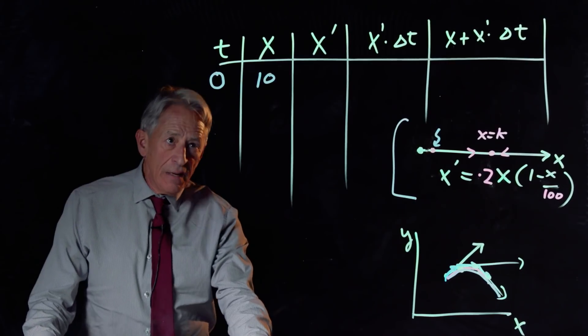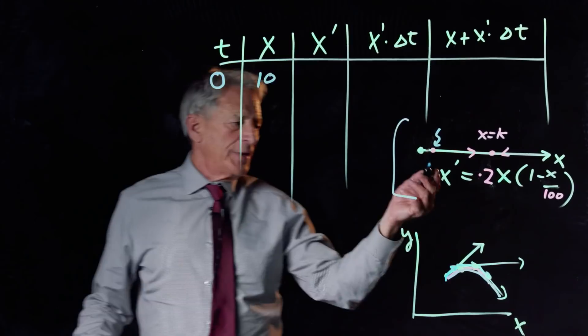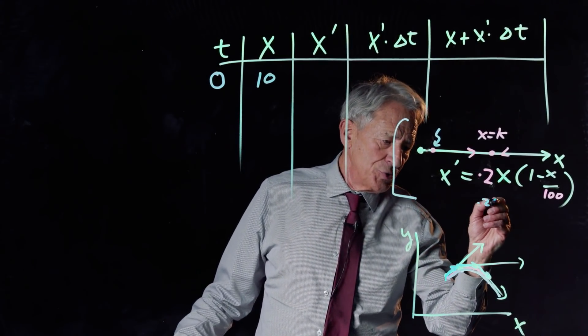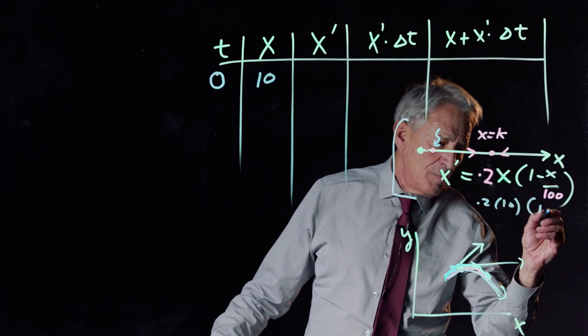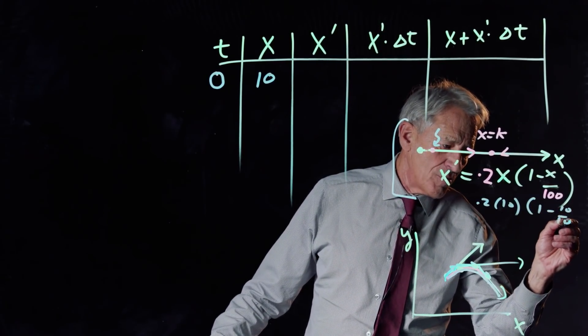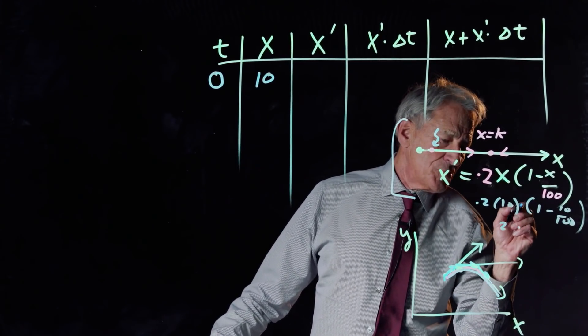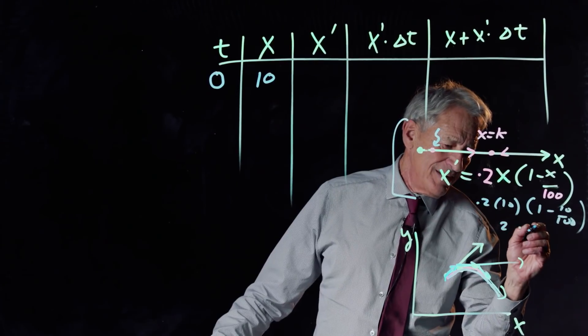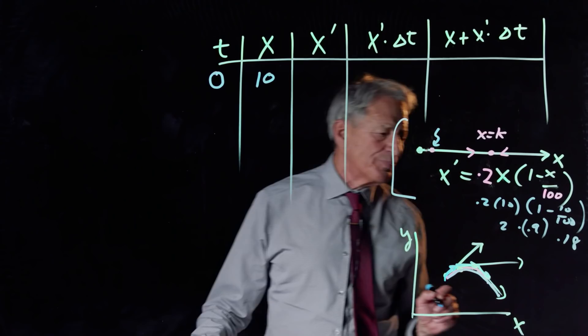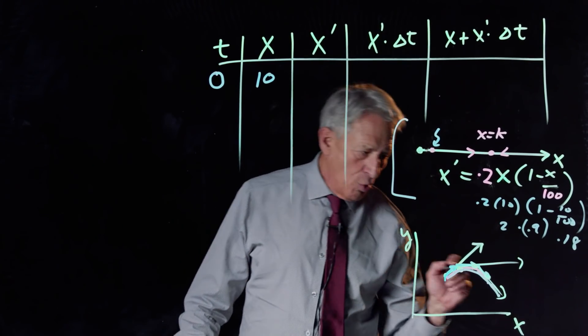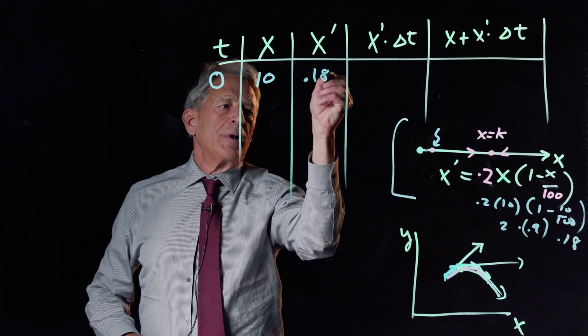Okay, now for X equals 10, what is X prime? Well, it's 0.2 times 10 times 1 minus 10 over 100. That's 2 times 0.9, which is 0.18. So, now we have X prime is 0.18.